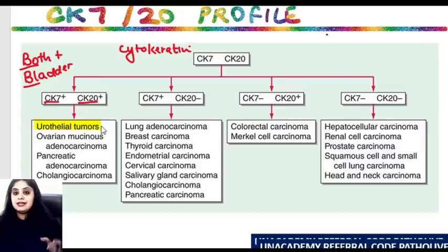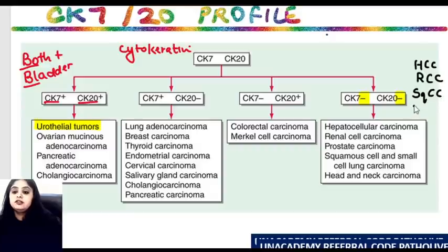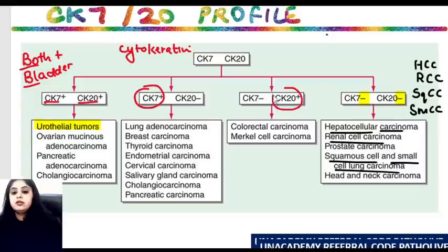Next, when both CK7 and CK20 are negative — I call these the CC tumors: hepatocellular carcinoma, renal cell carcinoma, squamous cell carcinoma, and small cell carcinoma — all of these are going to be negative. I'm then left with two variations: only CK7 positive, and only CK20 positive.